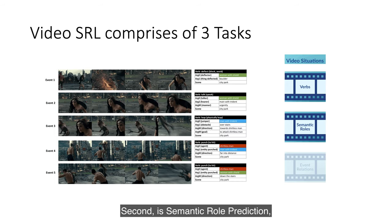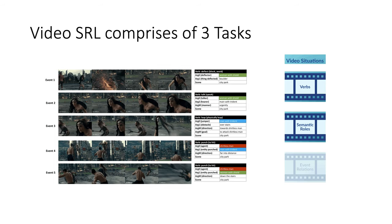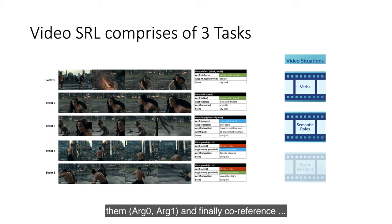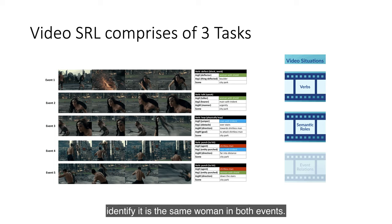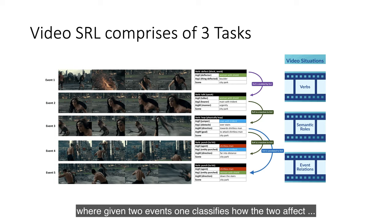The second is Semantic Role Prediction, where given a verb such as deflect, one has to identify the entities participating — such as the woman with the shield or the boulder — as well as the roles played by them, which is argument 0 and argument 1. Finally, we coreference these entities across events, identifying that it is the same woman in both events. The third is Event Relation Prediction, where given two events, one classifies how the two affect each other, such as via a causal relation or a precondition.